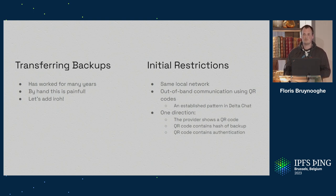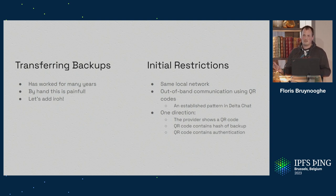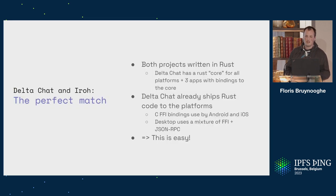Another consequence is that because IRO is a content-addressable system, the basic mechanism requires you to create the backup first to compute the hash. So it's one-directional: the provider creates a QR code, and the new device has to do the scan. That's about the restrictions we set out.